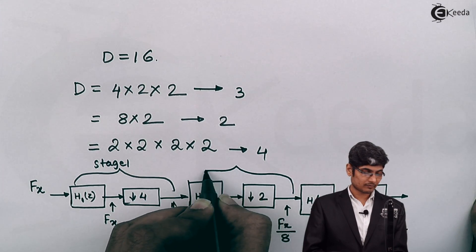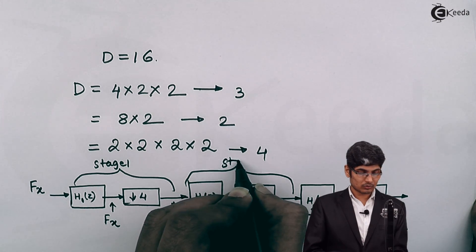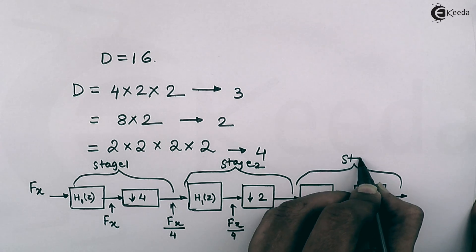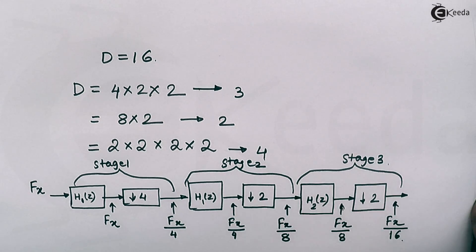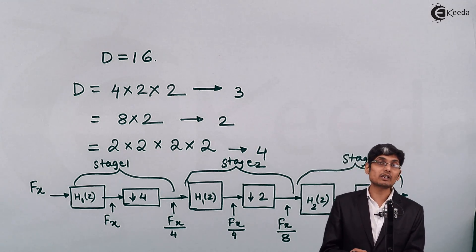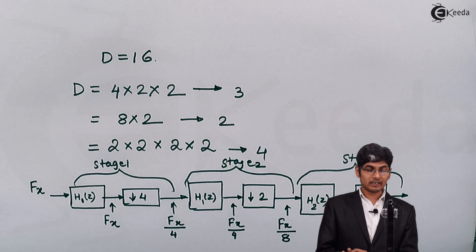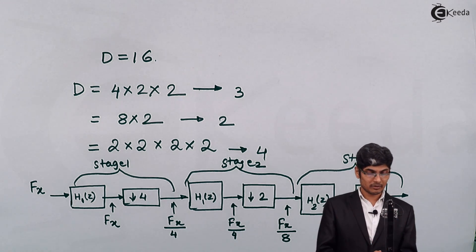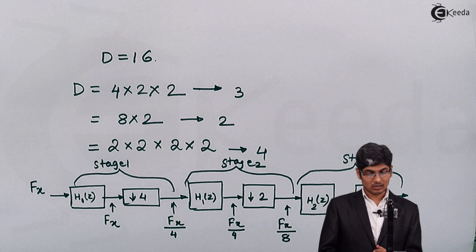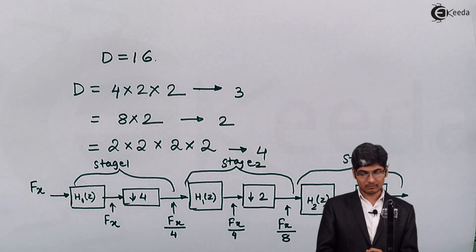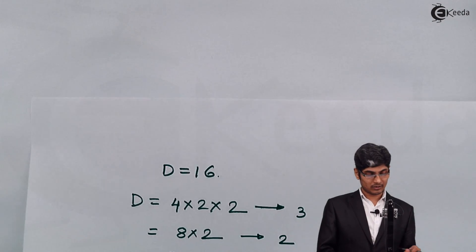This gives us Stage 1, Stage 2, and Stage 3. So I divided the given decimation factor of 16 into 3 sub-sections or sub-factors (4, 2, 2), and at the final output I achieve fx/16 — the required sampling rate.